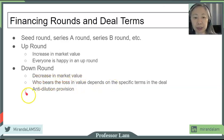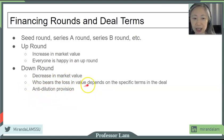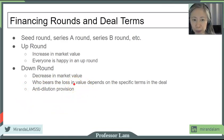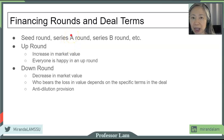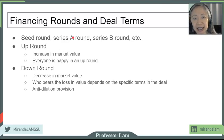One very important term is something called an anti-dilution provision. This is typically something negotiated by the investor rather than the entrepreneur. For example, if an entrepreneur goes to investor A during Series A, and investor A agrees to invest but has some reservation — they are concerned they may lose a lot of money — they may put in an anti-dilution provision.